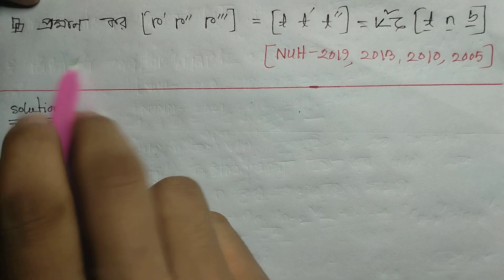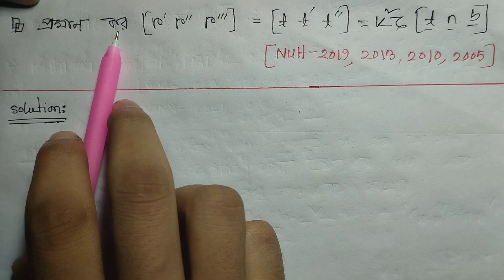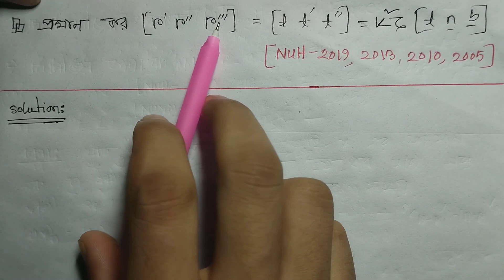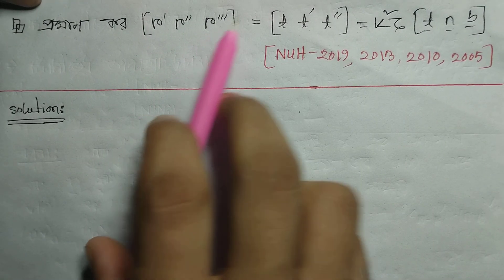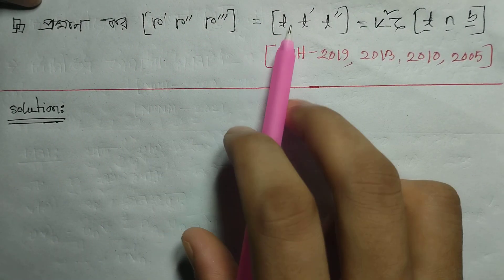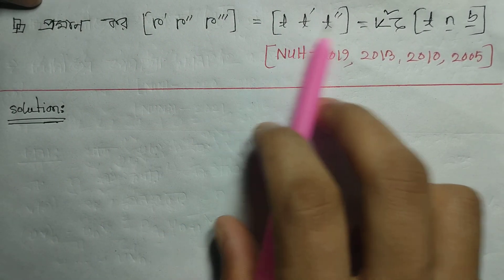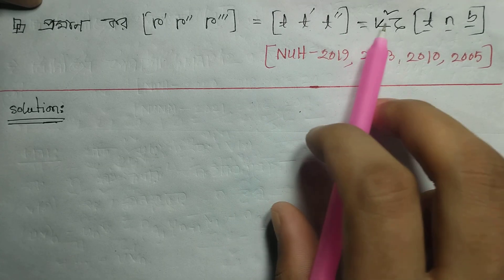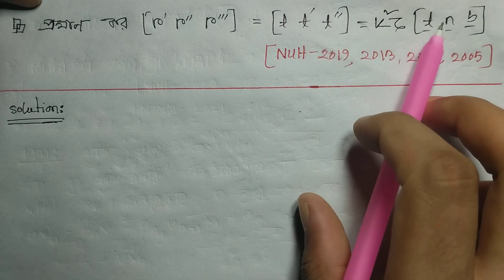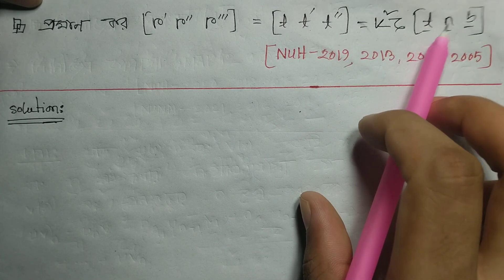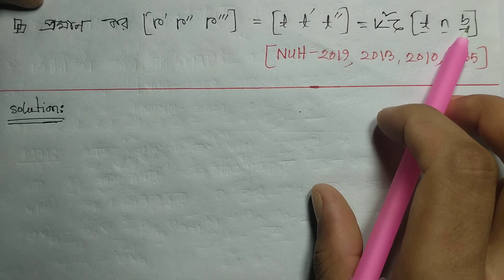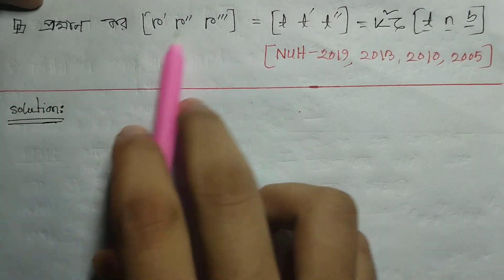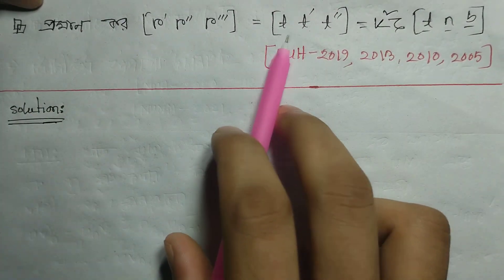We are going to show you that R' equals T', and T' equals kappa square tau into T, N, B. This relates to the Frenet-Serret framework involving curvature kappa and torsion tau.